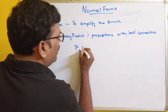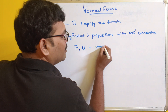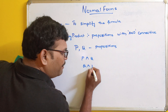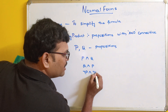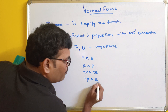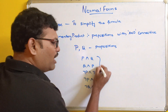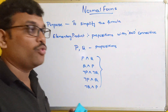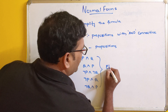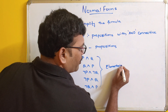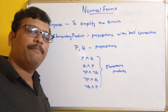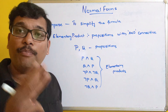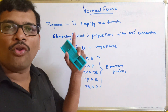For example, similarly P and Q are simple propositions. So P and Q, Q and P, negation P and negation Q, negation P and Q, negation Q and P — whatever propositions are connected with conjunction are called elementary products. So these two forms, elementary sum and elementary product, will be used in normal forms.